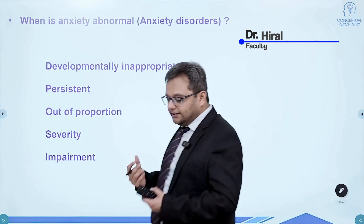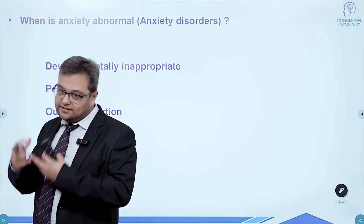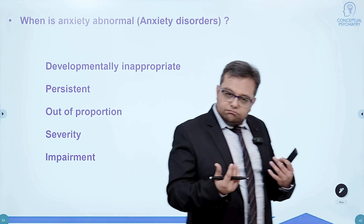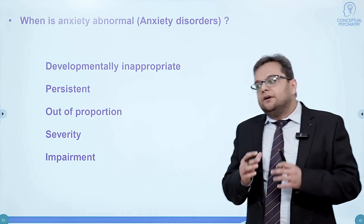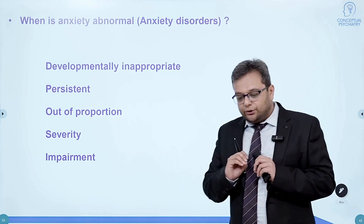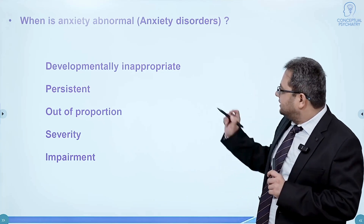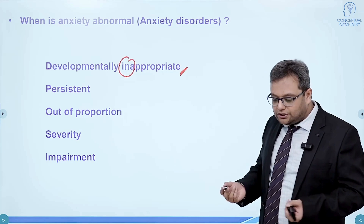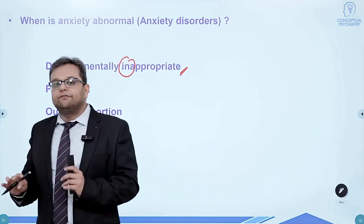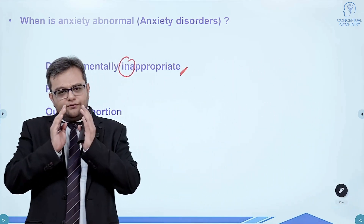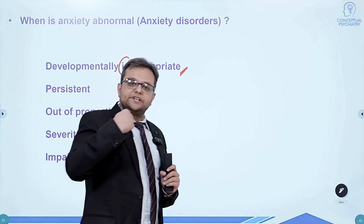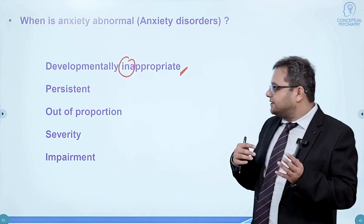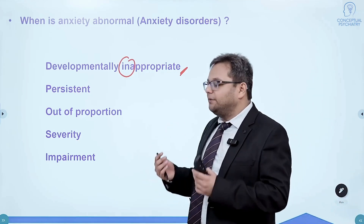In adults, change of job, change of residence, change of city, life events like marriage, or loss of a loved one — but they are all normal phenomena because they don't cross the boundaries. What we talked about was normal developmental anxiety; it lasts only for a brief period and does not have significant impairment on routine functioning. These are the basic differentiating points between normal and abnormal.